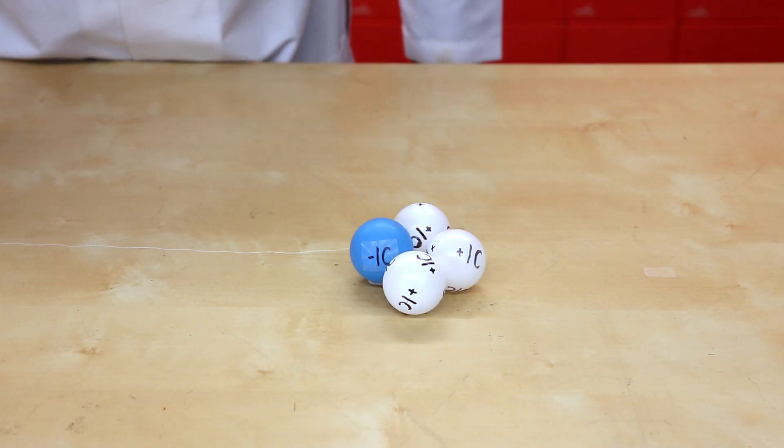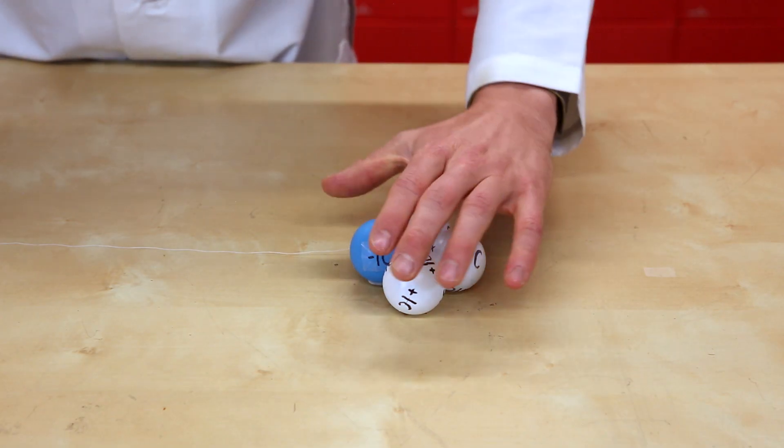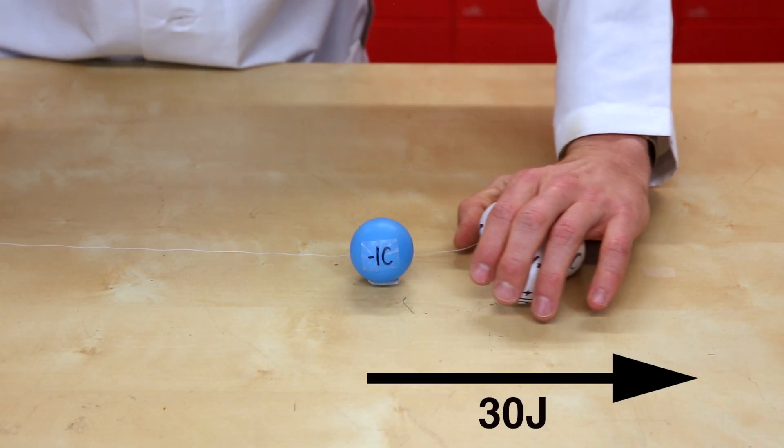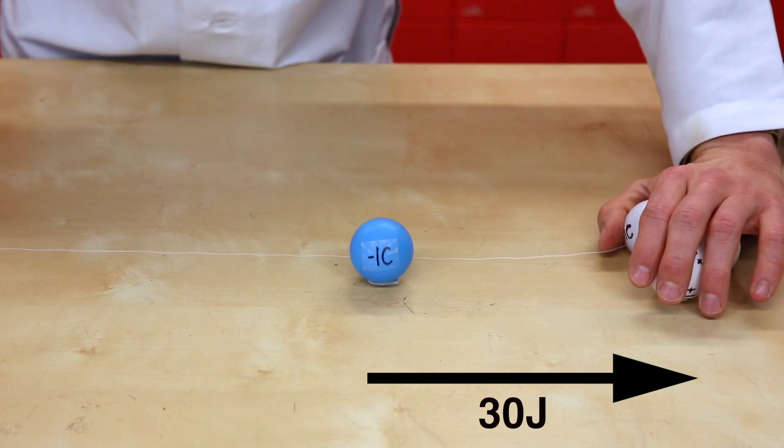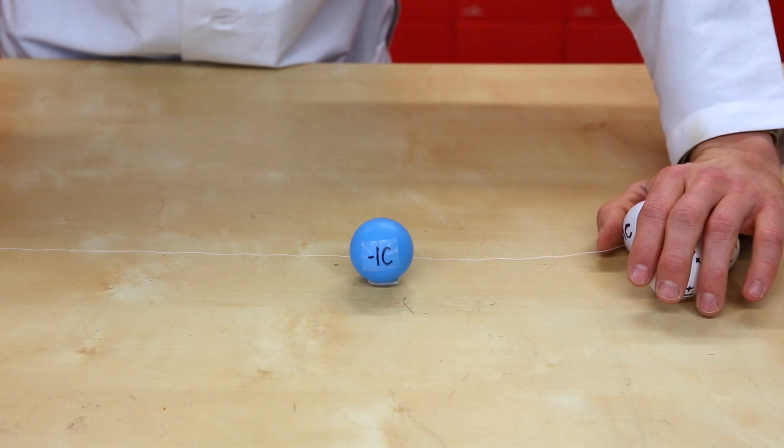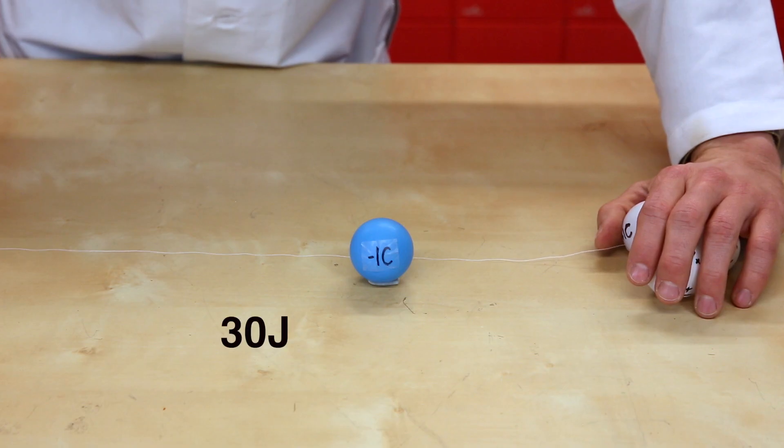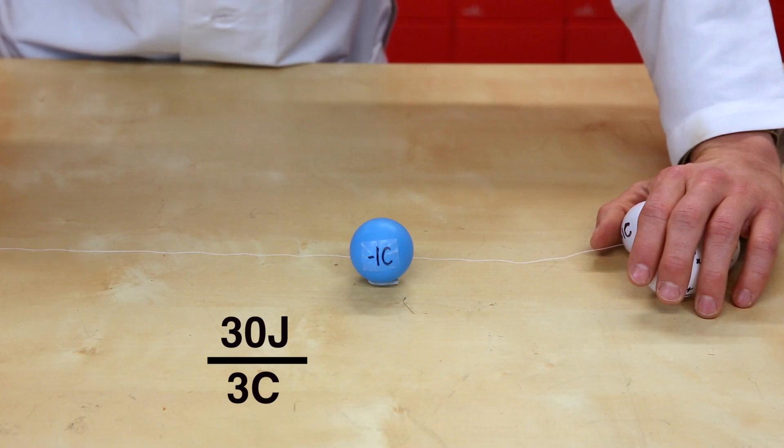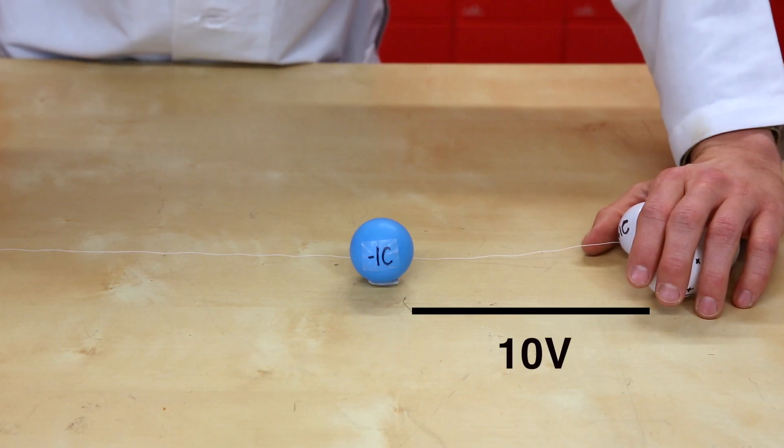Now if I repeated this demo with three positively charged particles, it would take 30 joules of energy to move them the same distance away from the negative particle. So they have 30 joules of potential energy as long as I'm holding them here. As we defined earlier, voltage is the electric potential between two points. To calculate the voltage between their starting and ending points, we know that I did 30 joules of work to move the particles and the total charge is 3 coulombs. So the voltage is 30 joules divided by 3 coulombs, which is 10 volts. We would say that the electric potential between these two points is 10 volts.